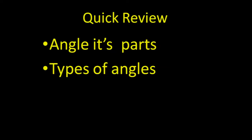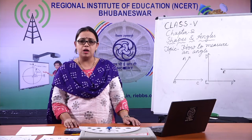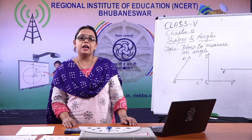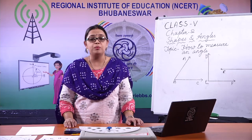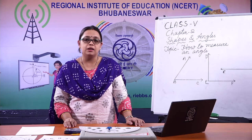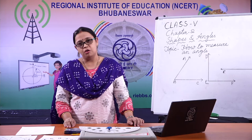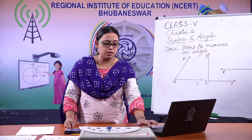We covered angle and its parts, and types of angles. The types of angles we learnt are: zero angle, acute angle, right angle, obtuse angle, straight angle, reflex angle, and complete angle. I had given you two interesting assignments — I hope you enjoyed doing them, including clicking photographs by making angles with your body parts. So, let us start today's discussion.